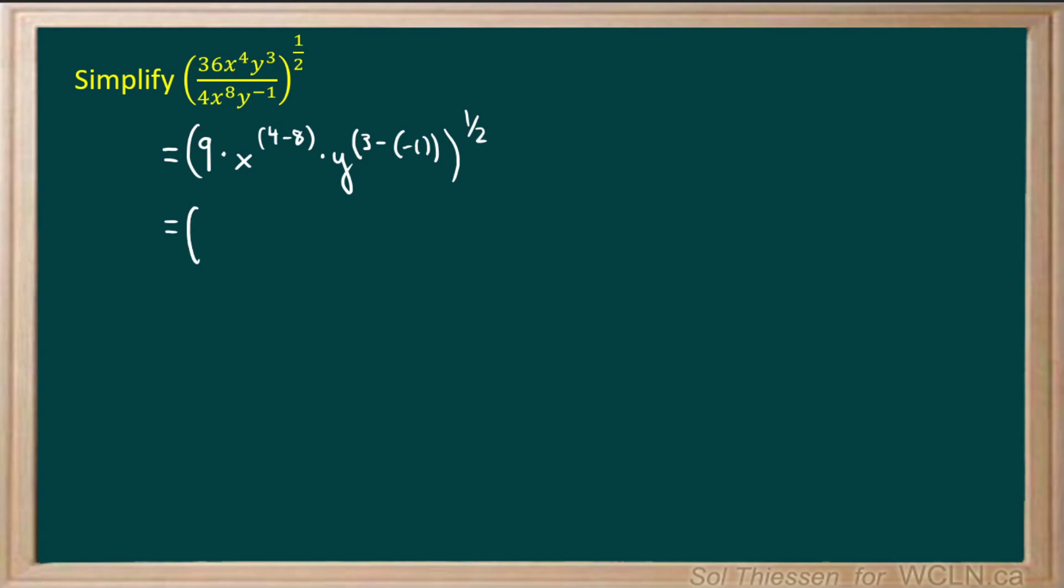Let's perform some more simplification in the brackets here. We'll have 9 times x to the power of negative 4 times y to the power of positive 4, since 3 minus negative 1 is the same as 3 plus 1.